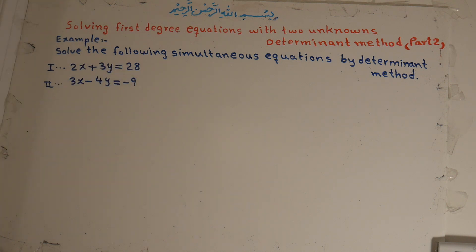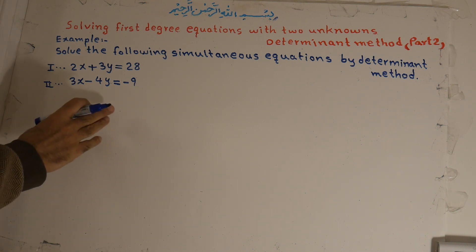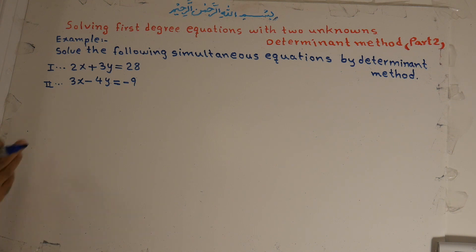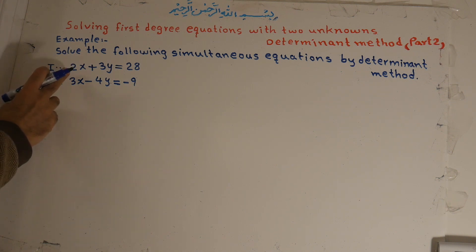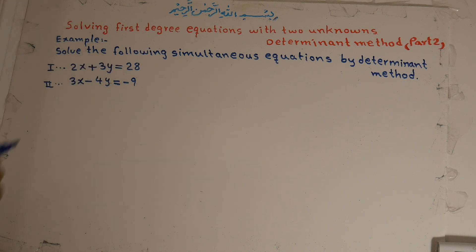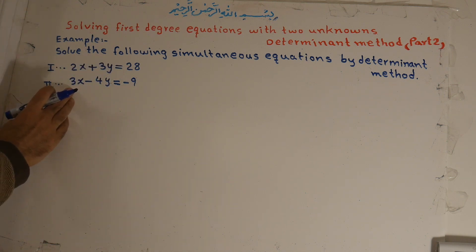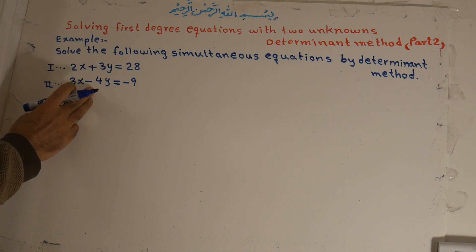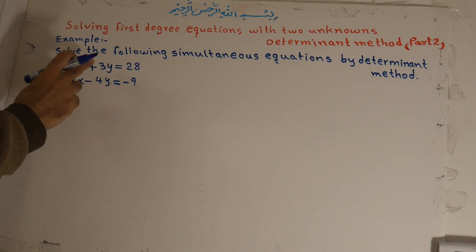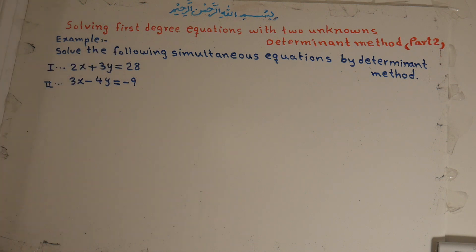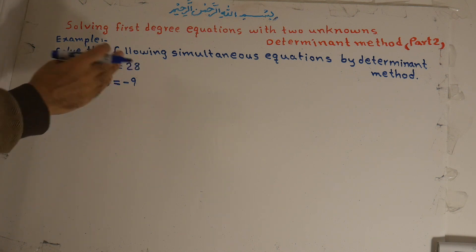Example: solve the following simultaneous equations by the determinant method. Equation number one is 2x plus 3y equals 28, and equation number two is 3x minus 4y equals negative 9. The general form is a1x plus b1y equals c1, and a2x plus b2y equals c2, where a is the coefficient of x, b is the coefficient of y, and c is the constant.